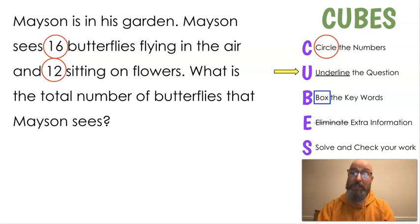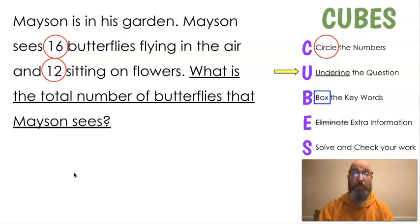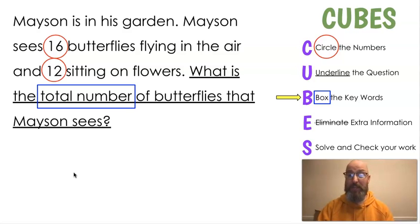Next, we're going to look for the question. Does anybody see it? What is that thing we're looking for? The question mark. So our question is going to be, what is the total number of butterflies that Mason sees? Look at that sentence that we just underlined. What are the key words? Usually sometimes at the end, this time it's not. I put it somewhere different. Total number. And when you see the words total number, that means add. So we know we're adding these two numbers.